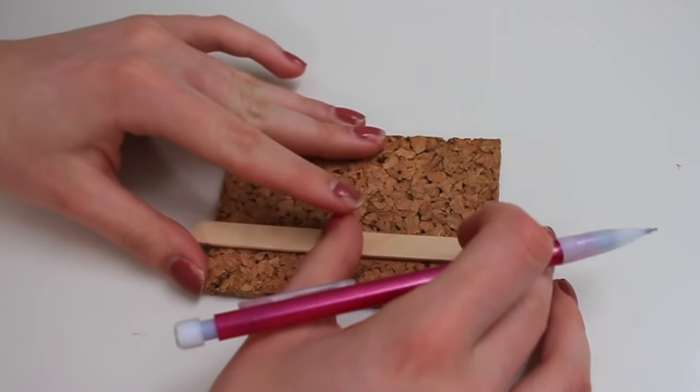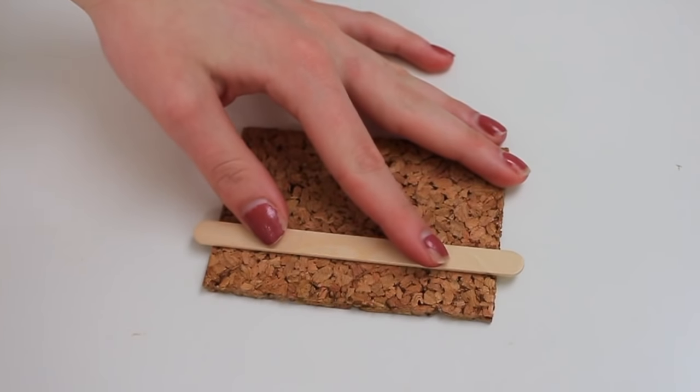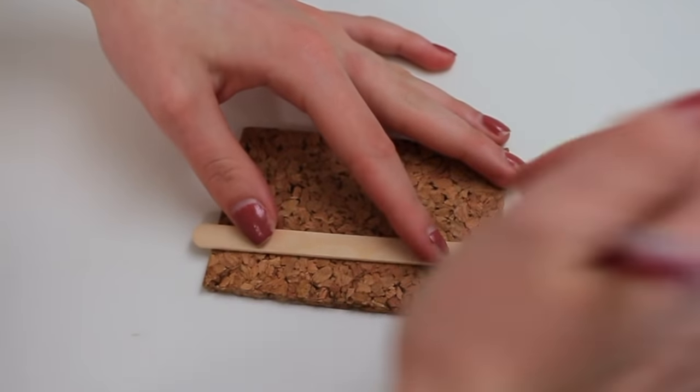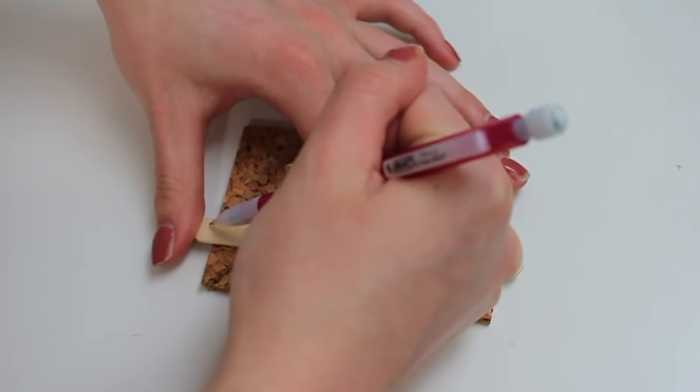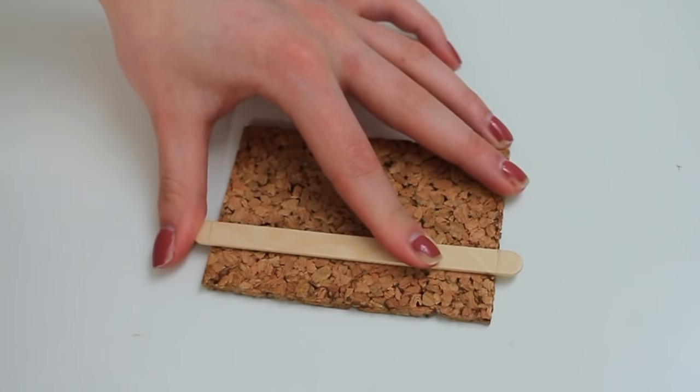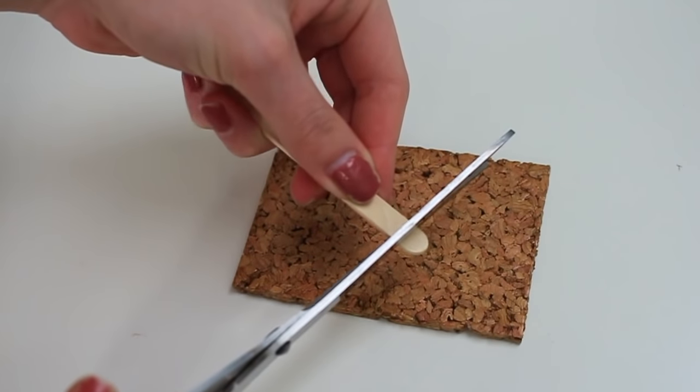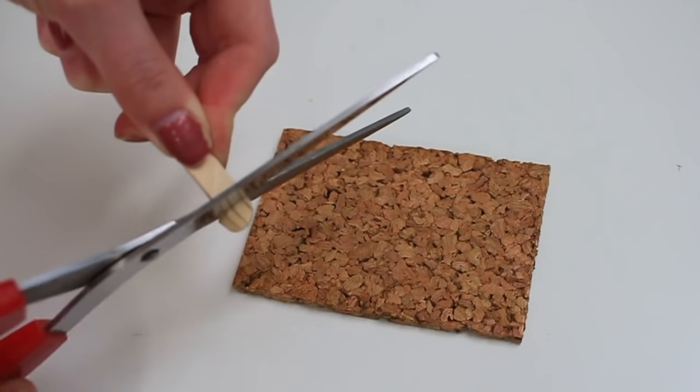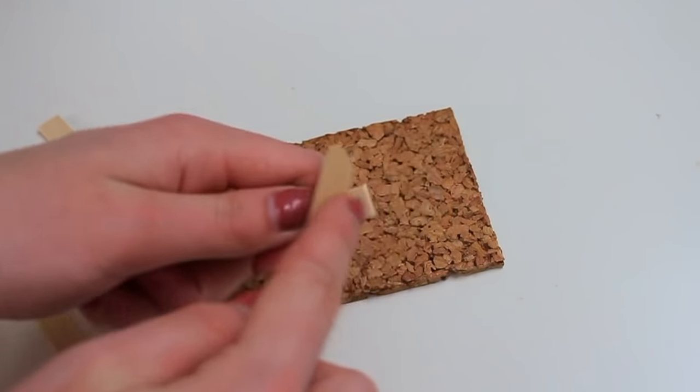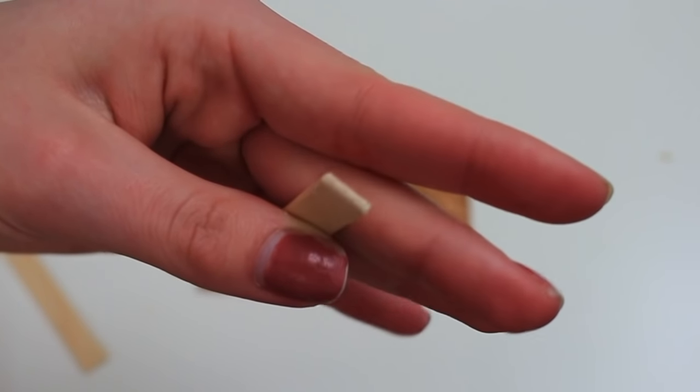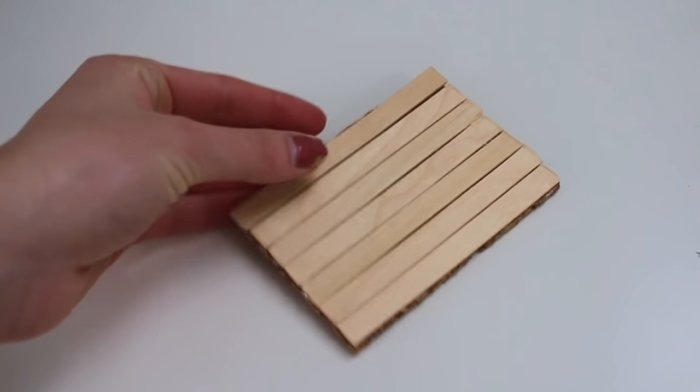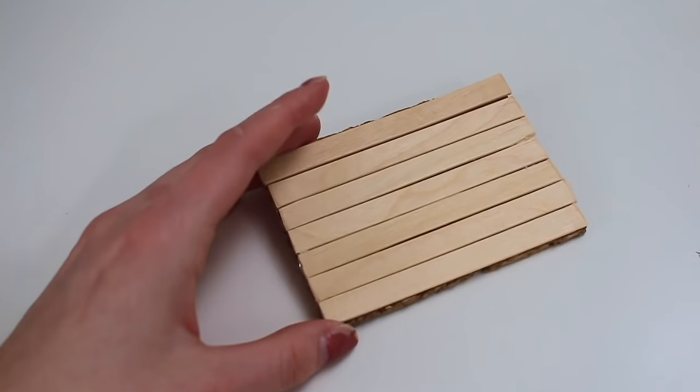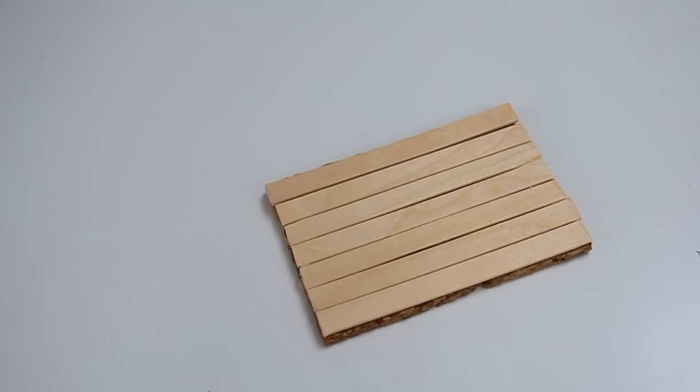So this part is pretty much optional. I just thought it would be cool to give it like a wood panel look. I just took some popsicle sticks and I measured them and I marked them with a pencil and then I just cut them and the edges were really rough when I cut them. So I used a nail file to round it off and make them more smooth. So then I just took my wood and I glued them all to the cork using some hot glue and that's pretty much it for the base of our clipboard.